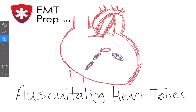An abnormal heart tone is called S3, and it's often termed a gallop. The S3 sound can be heard in healthy children and adolescents, but in an adult it's a negative sign often associated with heart failure. It's called a gallop because it sounds like a horse galloping, occurring at the end of the S1-S2 sequence. S3 occurs because of vibrations created from very rapid ventricular filling on the walls of the ventricles themselves.